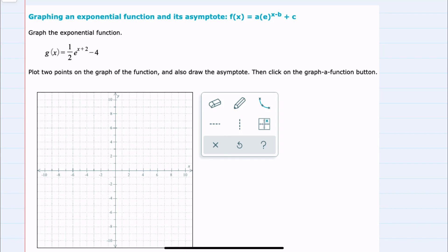In this video I'll be helping you with the problem type called graphing an exponential function and its asymptote, f(x) = ae^(x-b) + c. We're given the function g(x) and we're asked to graph it by plotting two points on the graph and also to draw the asymptote.